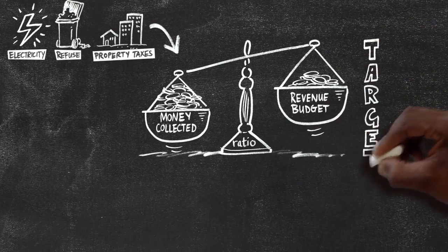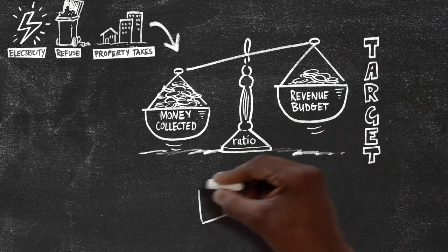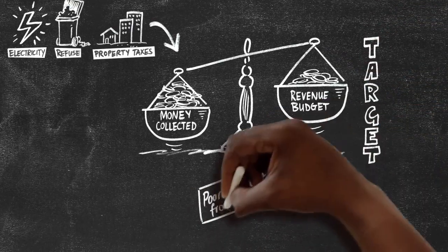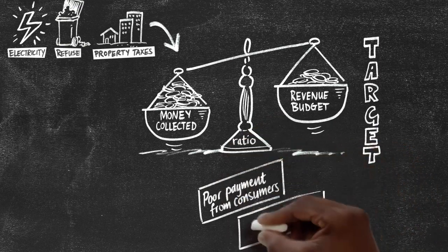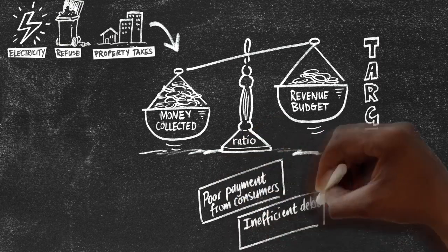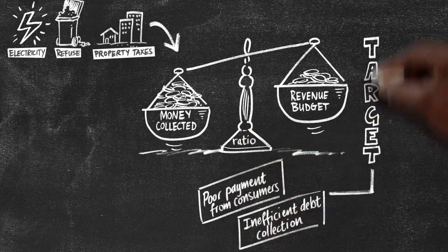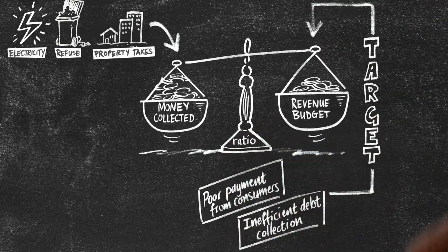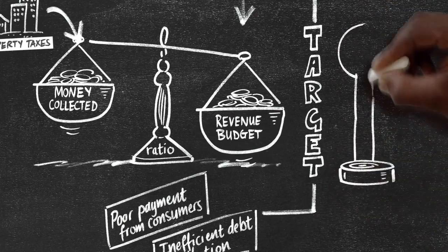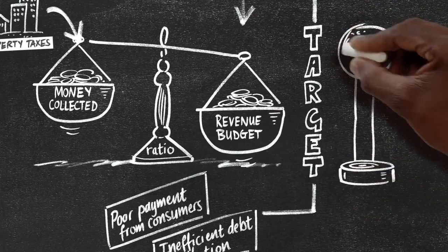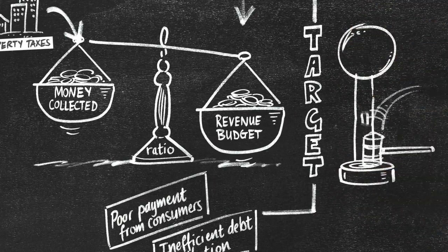Municipalities can miss their revenue targets for a number of reasons, including poor payment habits from consumers and inefficient debt collection. A municipality should collect at least 95% of its budgeted revenue.